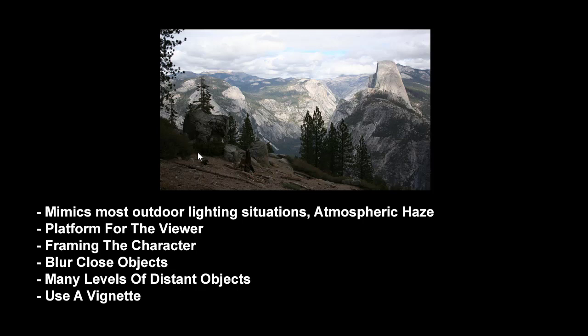The dark foreground elements are sort of a platform for the viewer — the viewer imagines themselves as part of the black foreground area, looking out to the lit landscape, almost like being in a dark movie theater looking at the screen. Another way to interpret this dark foreground is that the dark objects close to camera are like a picture frame to your painting. Placing these dark objects close to camera, especially if there's a figure in the mid ground, is sometimes referred to as framing the character. It can also be cool to blur those close foreground elements slightly, as though they're out of focus, which helps lead the eye to the subject in the mid ground.